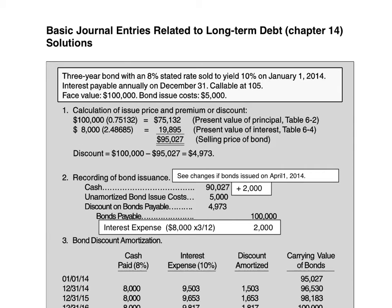There are a couple of items that you need to take mental note. Since interest is payable annually, we don't have to worry about adjusting the interest rates. Also, since the stated rate — the amount that we are paying — is less than the market rate, we can note right off the bat that the bond was sold at a discount.